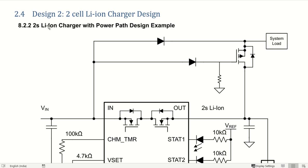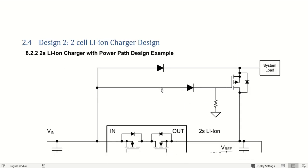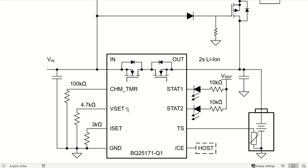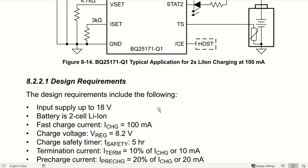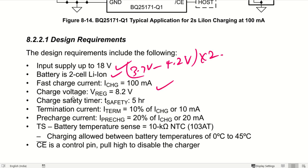There is one design that is already given — a lithium ion charger with power part design example — provided by the datasheet of Texas Instruments. The first design requirement is that the input supply is up to 18 volts, and the battery is two cell lithium ion, which can go up to 3.7 to 4.2 volt multiplied by two. The fast charge current is 100 milliamps, and the charge voltage is set to 8.2 volt.